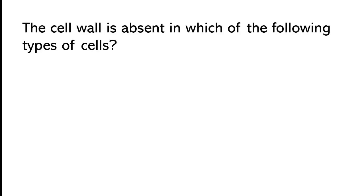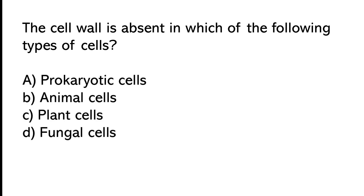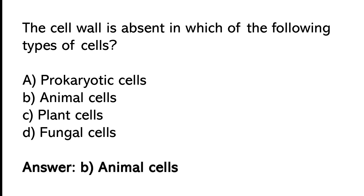The seal wall is absent in which of the following types of seals? Forkaryotic seal, animal seal, plant seal, or fungal seal. The correct answer is option B: Animal seals.